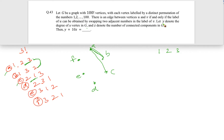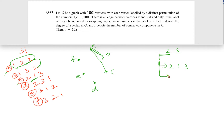Since they're asking about the degree of a vertex in G without specifying which one, it implies all vertices have the same degree. Let's figure out that degree. Take vertex 1 2 3 — how many other nodes is it connected to? We list the options: swap the first two to get 2 1 3, or swap the last two to get 1 3 2.